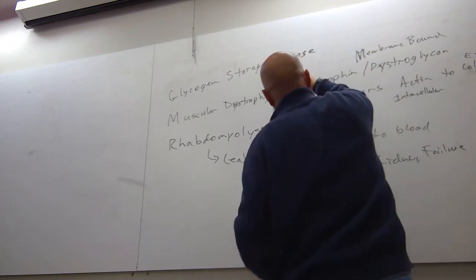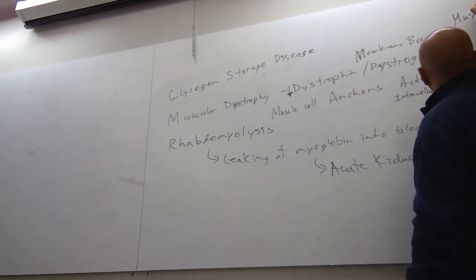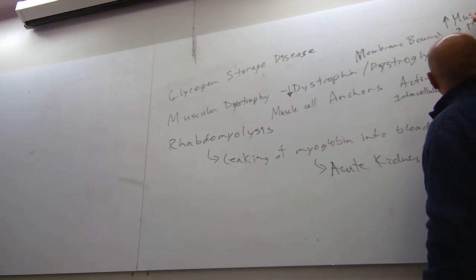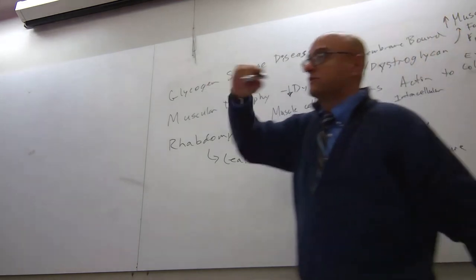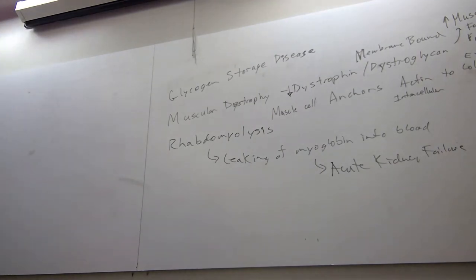If I have bad dystrophin or bad dystroglycan or any one of the components that make this huge complex up, then I'm going to have some form of muscular dystrophy, which gives me a decrease in this, and I get an increase in muscle fatigue and muscle weakness. Of course, stuff like ALS can give muscle weakness, can't it? Polio can give muscle weakness, can't it?